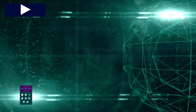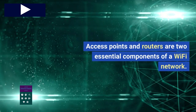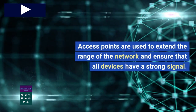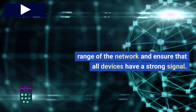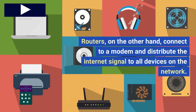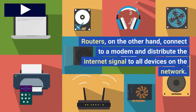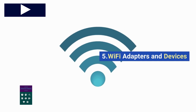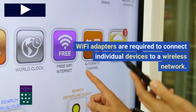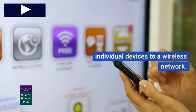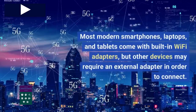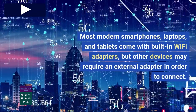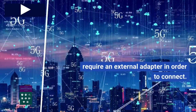Access points and routers are two essential components of a Wi-Fi network. Access points are used to extend the range of the network and ensure that all devices have a strong signal. Routers connect to a modem and distribute the internet signal to all devices on the network. Wi-Fi adapters are required to connect individual devices to a wireless network. Most modern smartphones, laptops, and tablets come with built-in Wi-Fi adapters, but other devices may require an external adapter in order to connect.